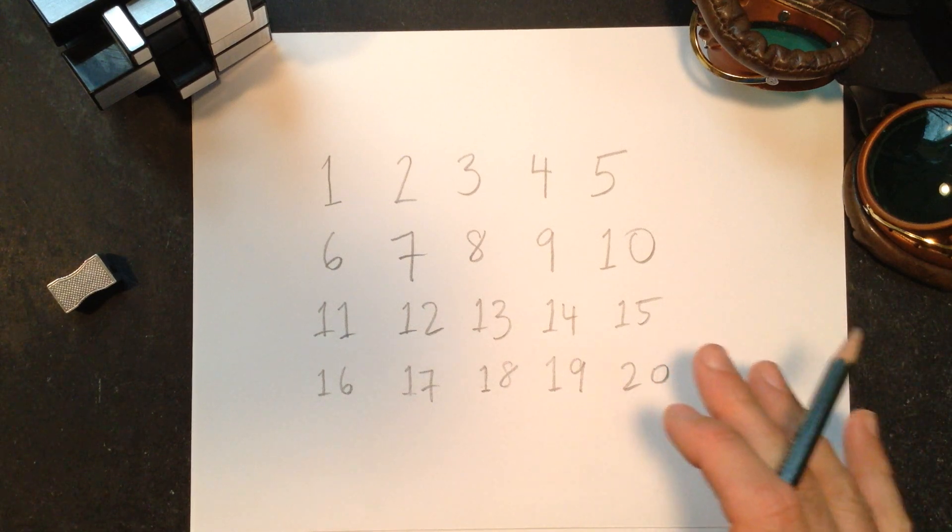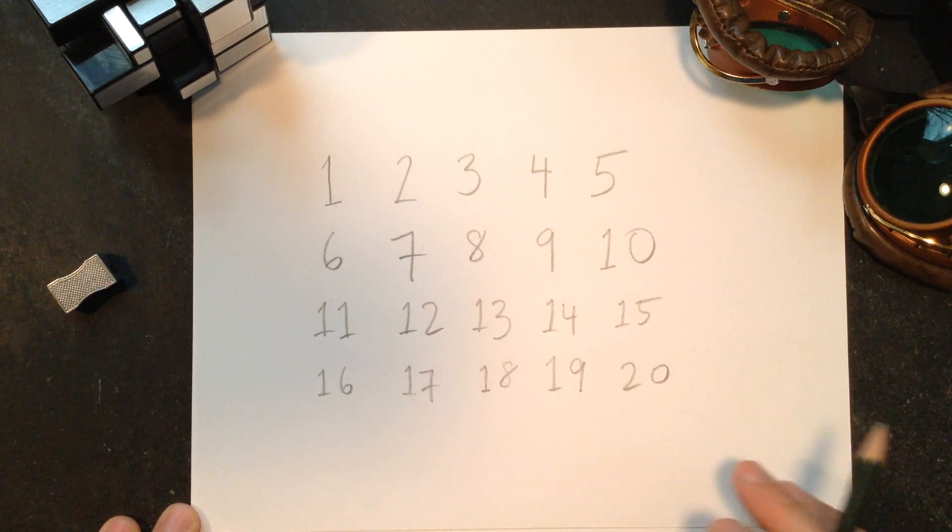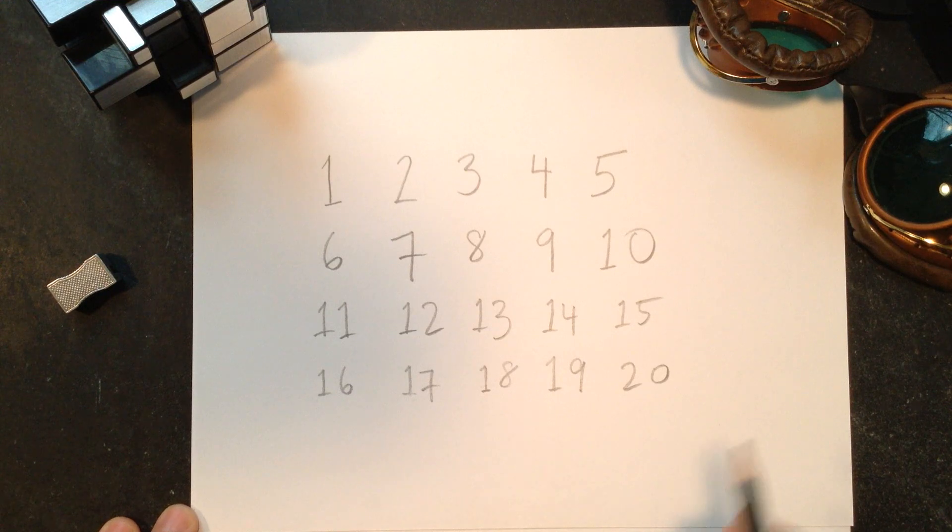All right, this is a quick common-sense proof of the important mathematical scientific finding that 17 is the most random number between 1 and 20. Very important, all of those words.